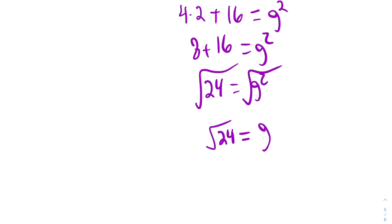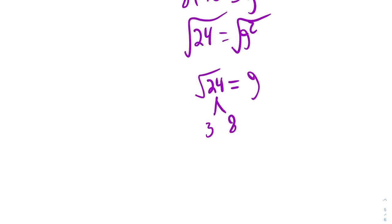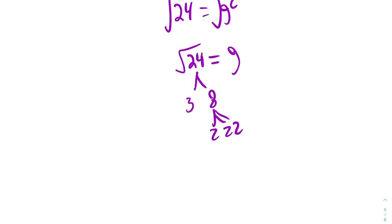But 24 breaks down into 3 times 8. 8 breaks down into 2 cubed. I did that one fast because we see the number 8 all the time, and I know it's going to break down into 2 cubed. So that means that G is equal to the square root of 2 cubed times 3, which makes 2 square root 2 times 3, which is 2 square root of 6 is equal to G.